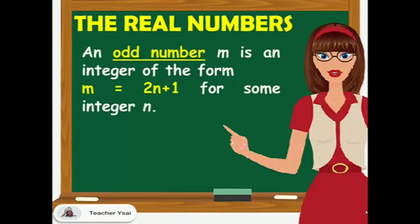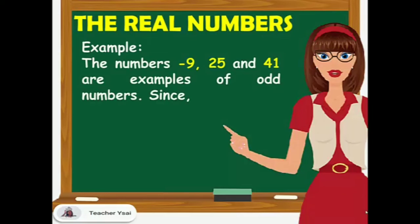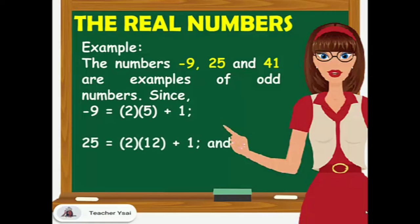An odd number M is an integer of the form M equals 2N plus 1 for some integer N. For example, the numbers negative 9, 25, and 41 are examples of odd numbers. Negative 9 equals 2 times negative 5 plus 1, 25 equals 2 times 12 plus 1, and 41 equals 2 times 20 plus 1. This follows the form M equals 2N plus 1 for odd numbers.